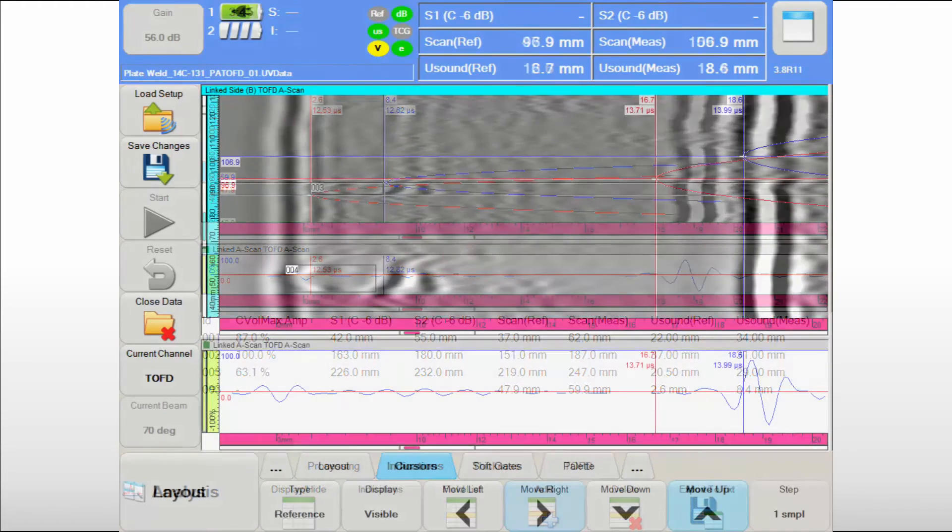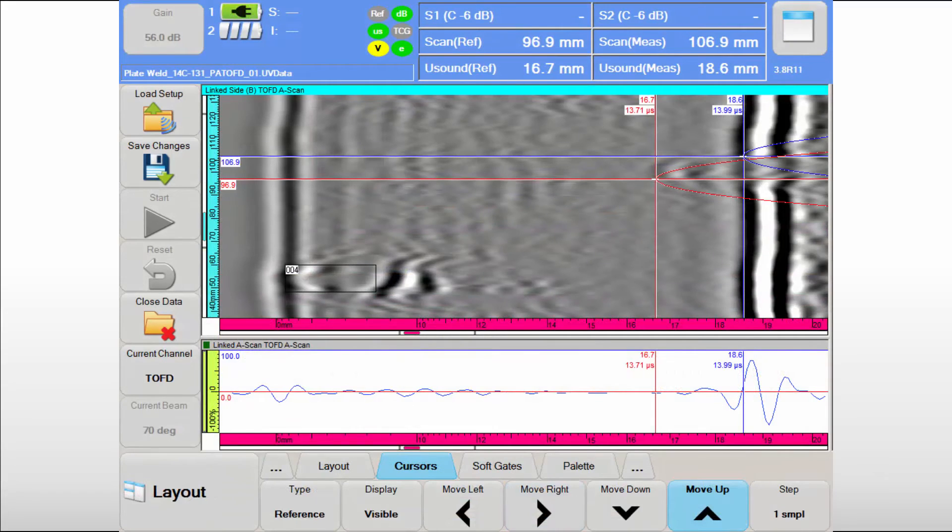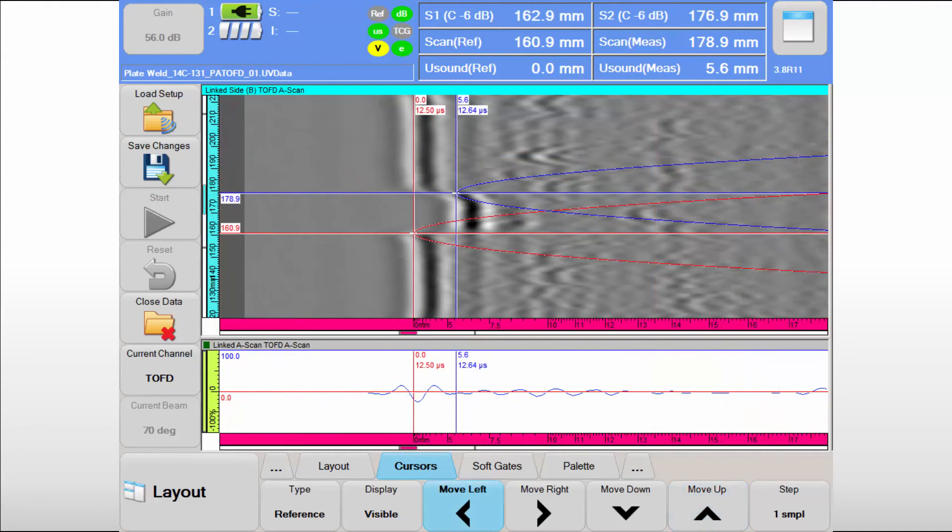Using the same simple technique, a 2 mm high incomplete penetration at the weld root is accurately measured at 1.9 mm. Finally, the toe crack at the near surface is also detected with TOFD, and accurate length and through wall sizing information can be obtained.